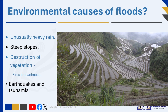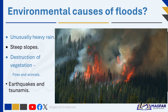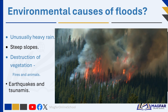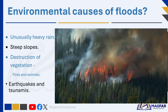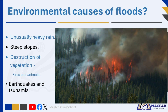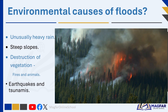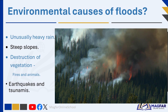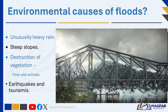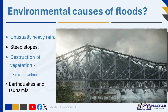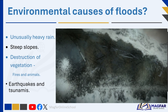Destruction of vegetation: if fires have destroyed the vegetation, water flows quickly into rivers off the bare ground, causing the rivers to burst their banks and cause flooding. If animals have eaten all the grass, water also flows quickly into rivers off the bare land.